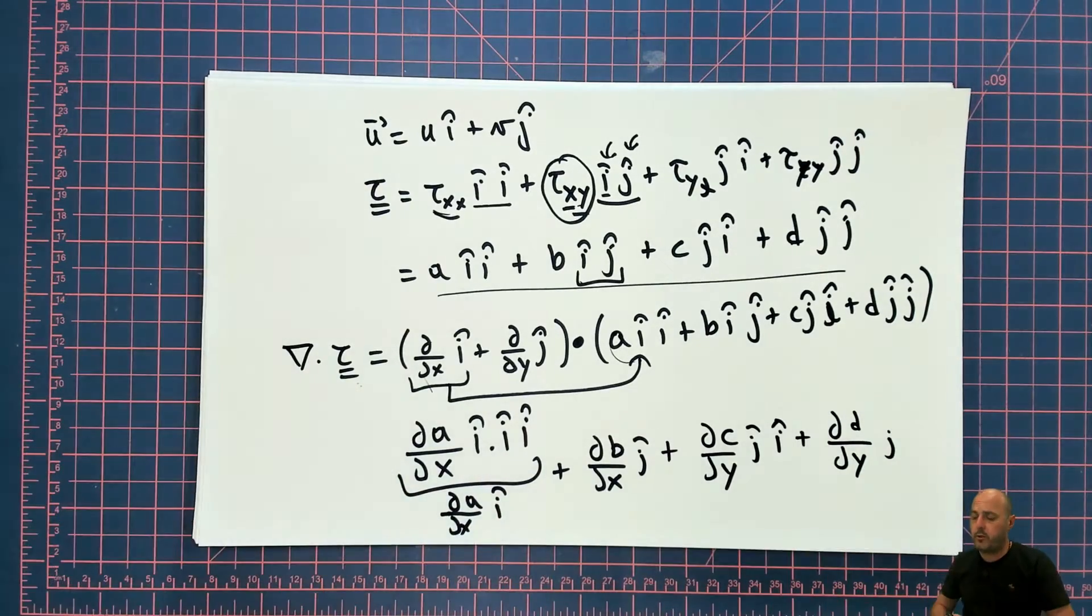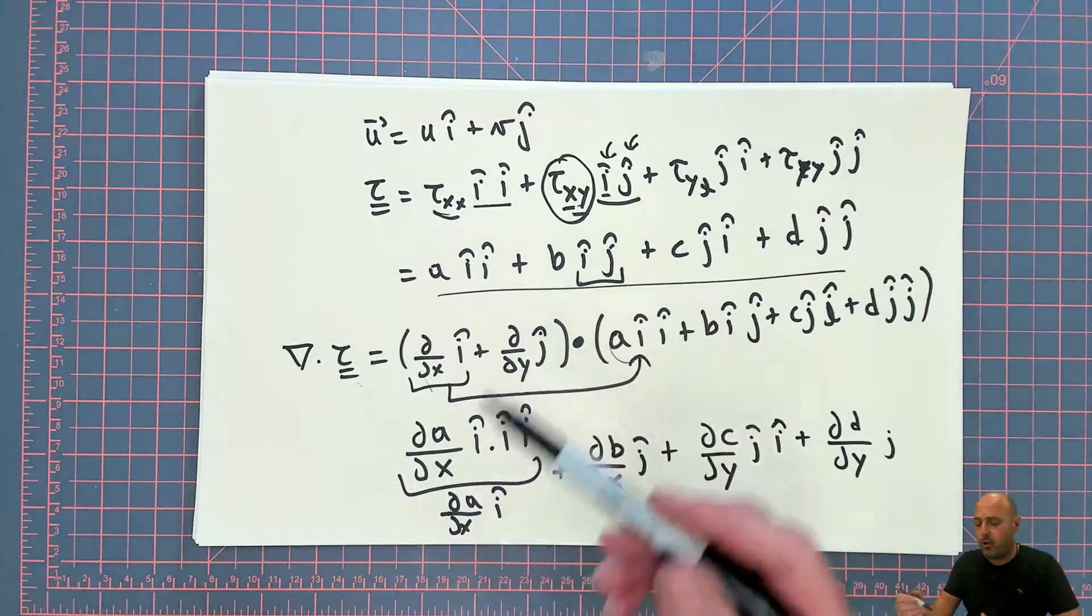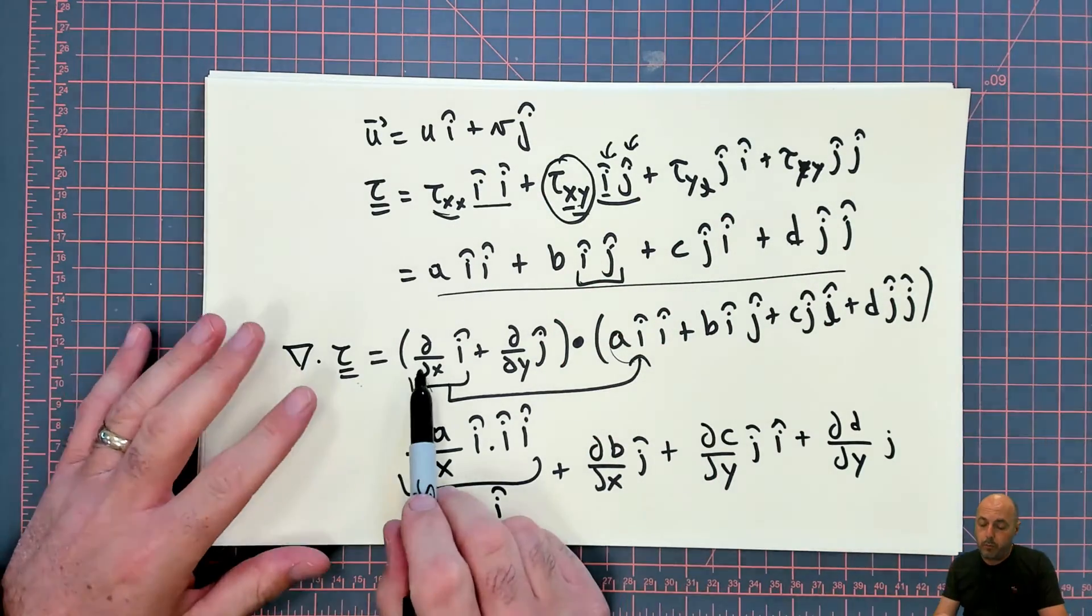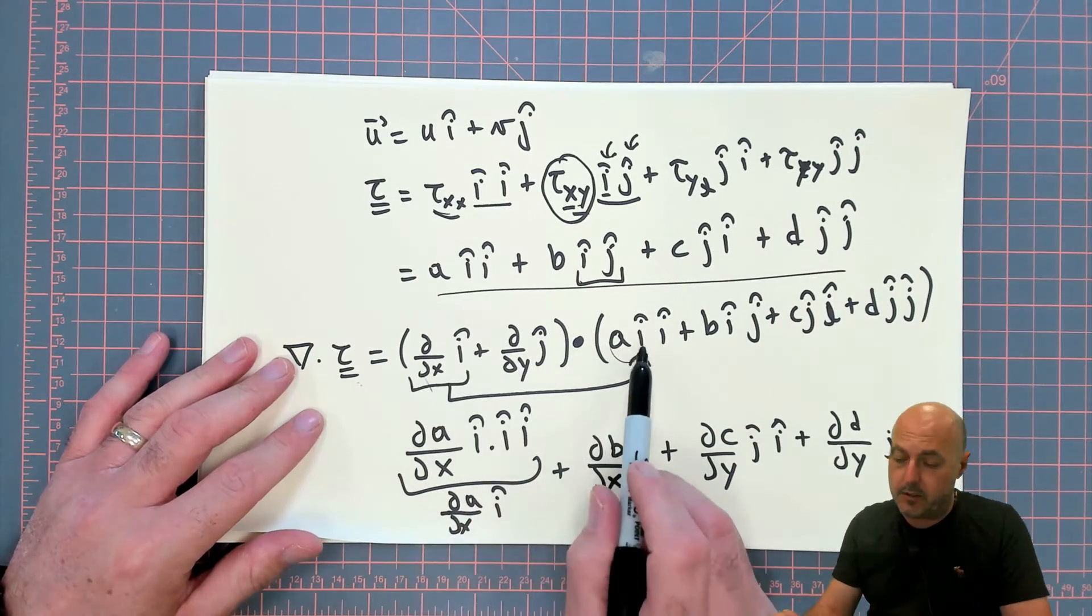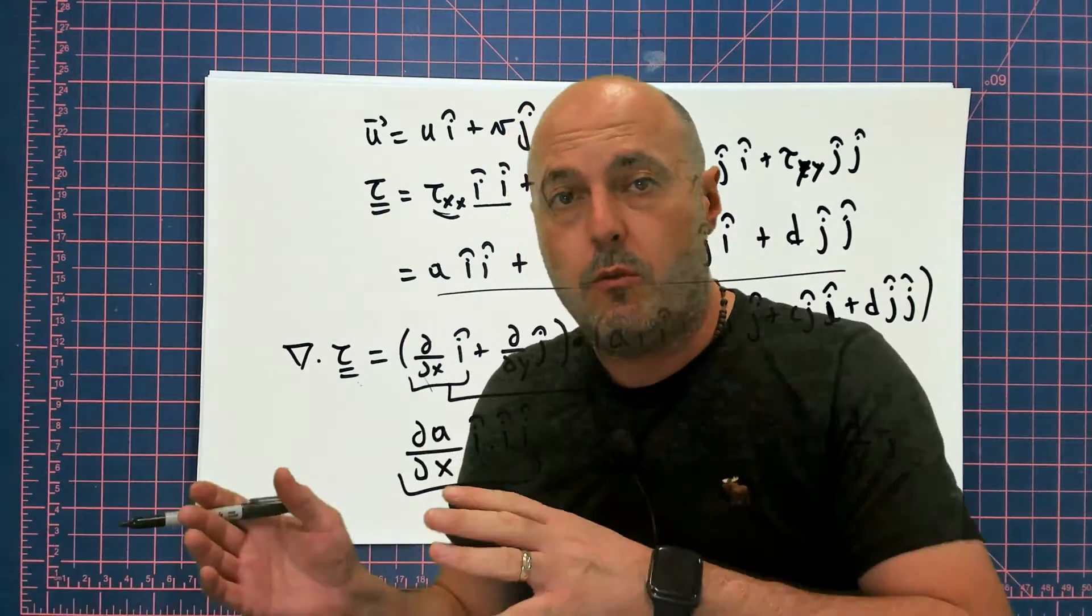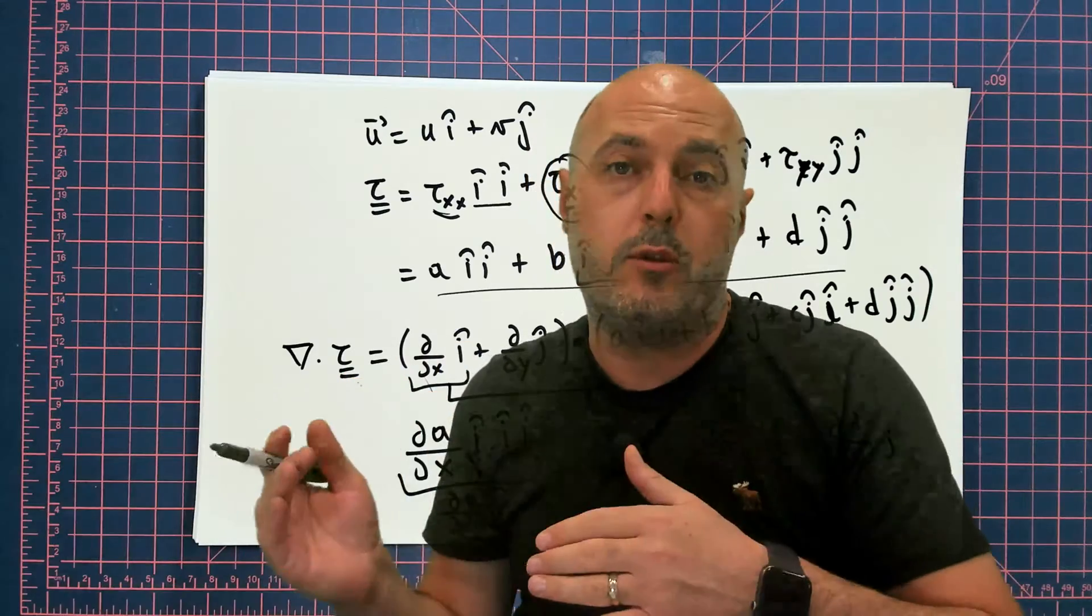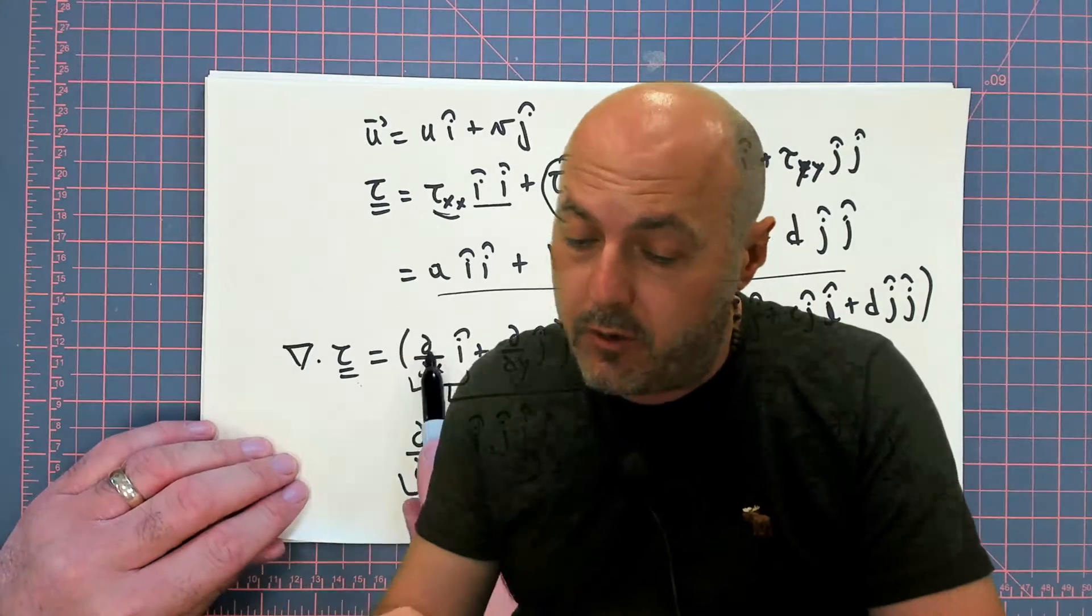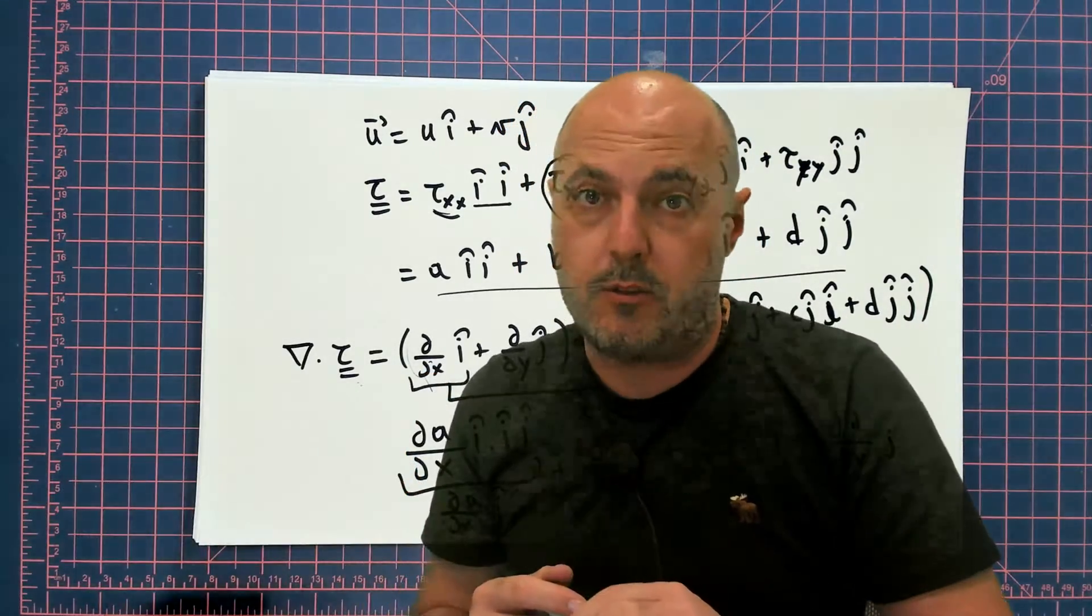Now, when you are in curvilinear coordinates, you can do the same procedure. You would have e_r, e_theta, and e_z. But then you would have to be careful that when you are applying these derivatives, these derivatives on the unit vectors, because the unit vectors, they change with the angle. For example, e_r changes with theta, and so does e_theta, it changes with theta. You have to be very careful as you apply these derivatives, because you would have to apply them on the unit vectors themselves.